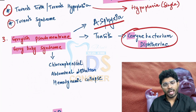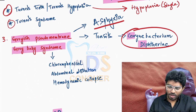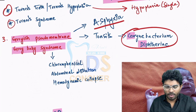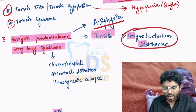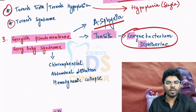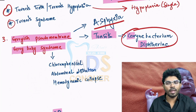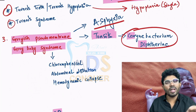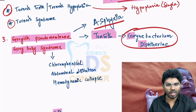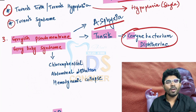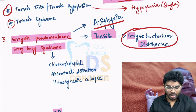Where do you see this gray pseudomembrane most commonly in diphtheria patients? In the tonsils. In the description, they will tell you there is a gray pseudomembrane on the tonsils which is very difficult to remove, resistant to removal, or painful during removal. Your answer should be diphtheria.